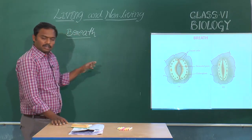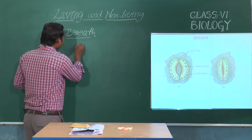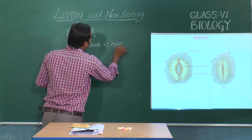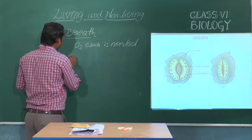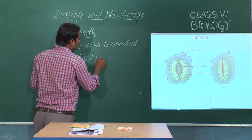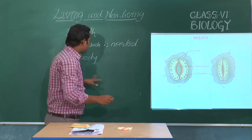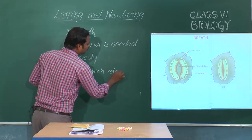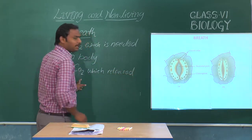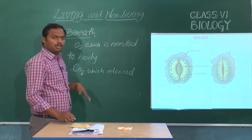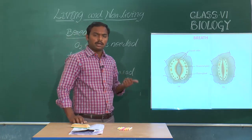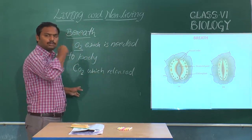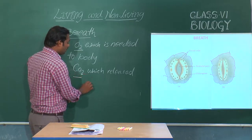During the exchange of gases, oxygen which is needed by the body is supplied, and carbon dioxide is sent out from the body. All living forms take in oxygen and release carbon dioxide — but wait, do plants do the same? No. Animals take oxygen into their body and release CO2.